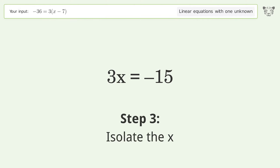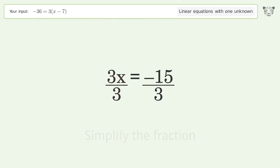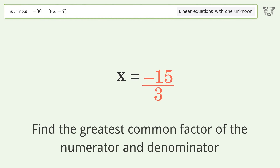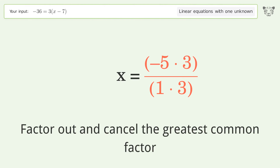Isolate the x by dividing both sides by 3. Simplify the fraction by finding the greatest common factor of the numerator and denominator, then factor out and cancel the greatest common factor.